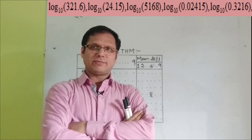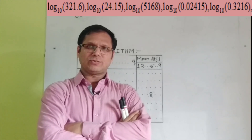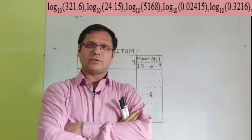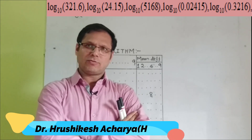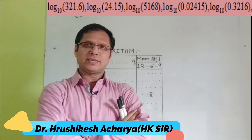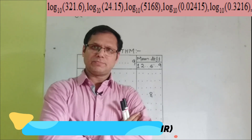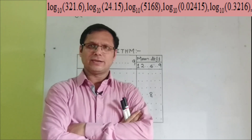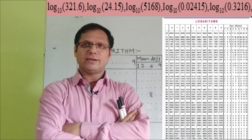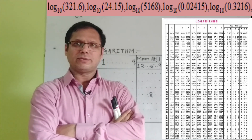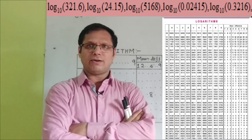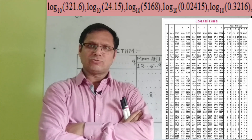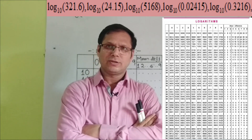Welcome to the session of mathematics. This is the third episode for the chapter logarithm. In the previous two episodes, we discussed the definition of logarithm, common logarithm, natural logarithm, and ten basic fundamental rules for logarithm. In today's episode, we will discuss how to use the log table — how to find the log of any natural number or decimal number — and how to find the characteristic and mantissa of log x. Through five or six examples, we will learn how to use the log tables.